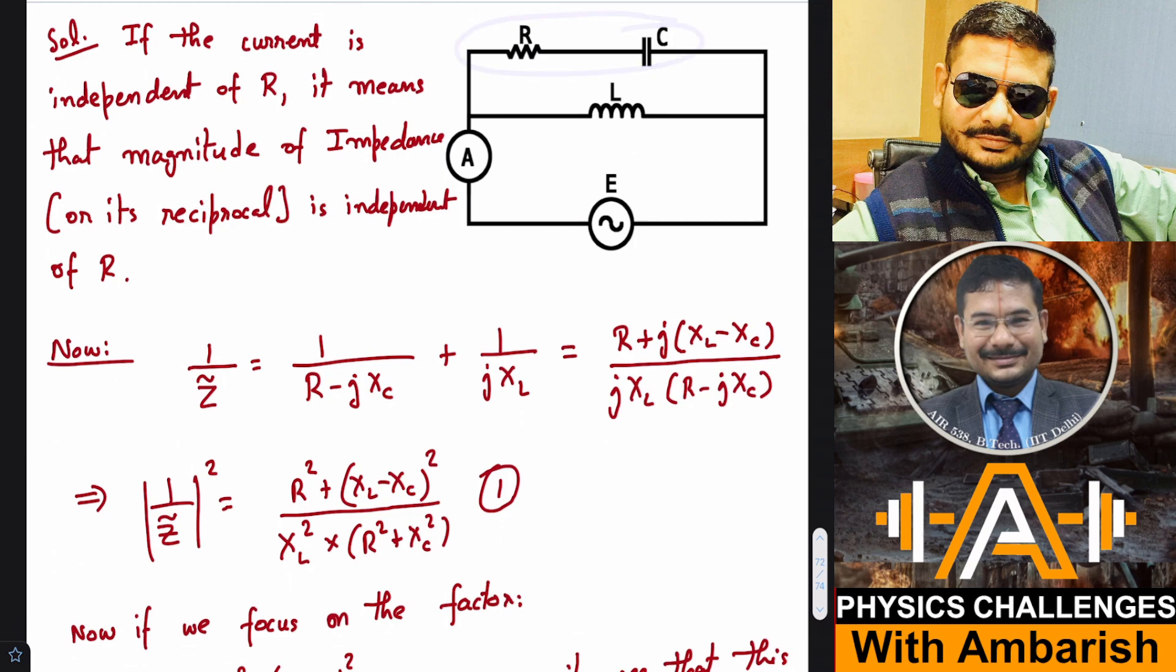One upon impedance phasor is equal to what? This branch has impedance R minus J XC, so one upon R minus J XC for this branch. And for this branch, the impedance is one upon J XL. I'm using the parallel formula one by R equals one by R1 plus one by R2. Now I can take the LCM and combine - numerator is R plus J XL minus XC, and denominator is J XL multiplied by this.